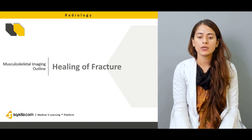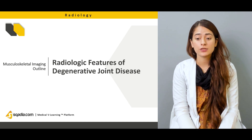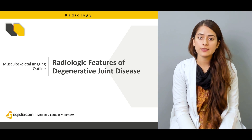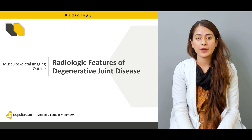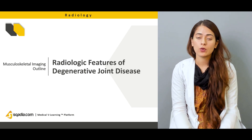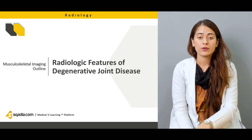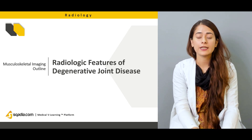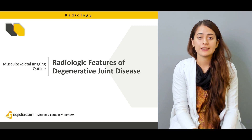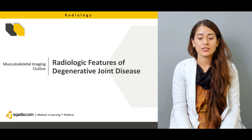Finally, we are going to talk about the radiological features of degenerative joint disease — what the degenerative features of the joint look like. That involves joint space narrowing, and we will talk about how everything resulting in degeneration is actually participating in a further degenerative process.